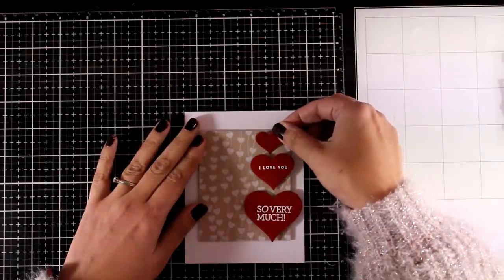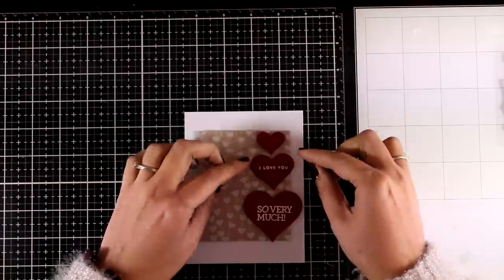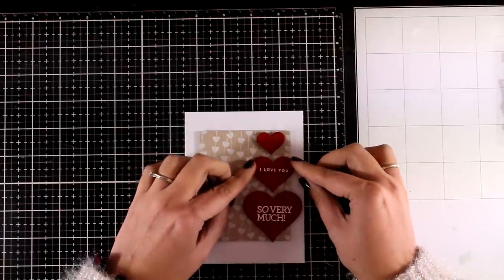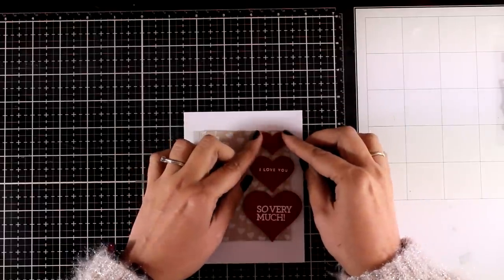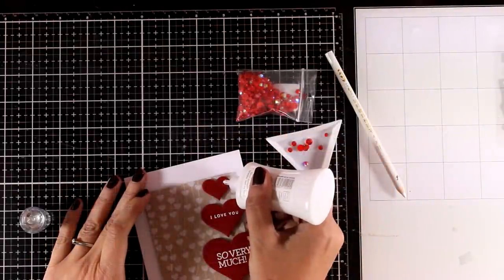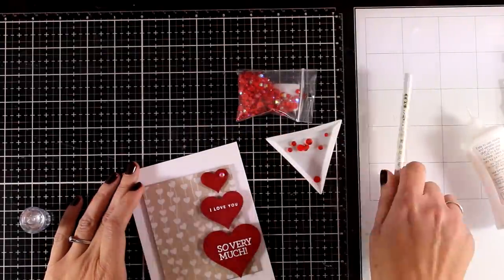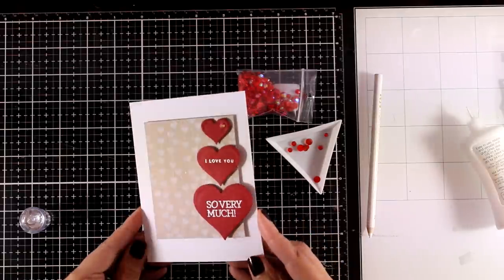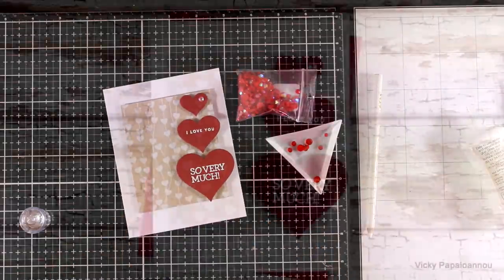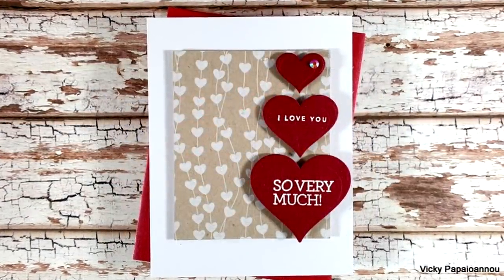I aligned them on the right of my panel just because I think it looks more interesting but you can definitely stick them at the center of your card. And since the smaller heart is empty I decided to add a gem just to spice it up a little bit. So here are some close-up photos on the last card for today.